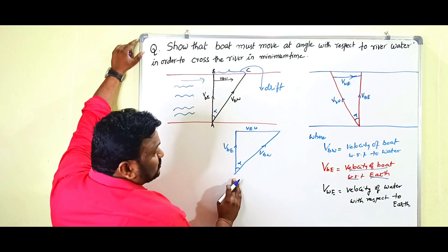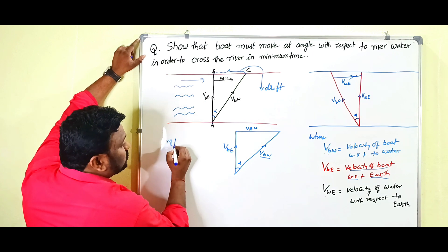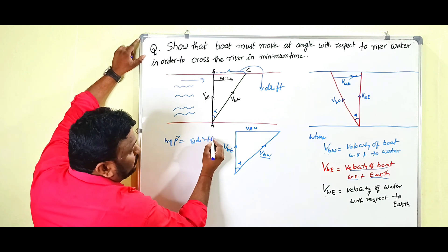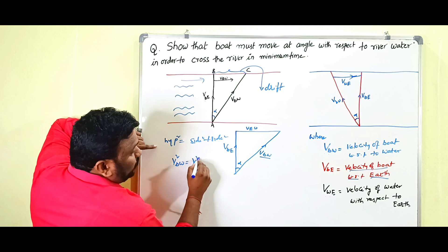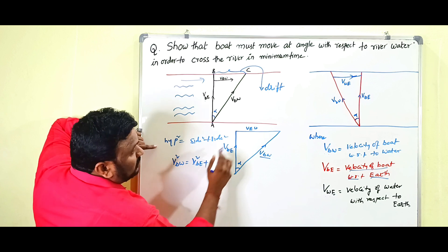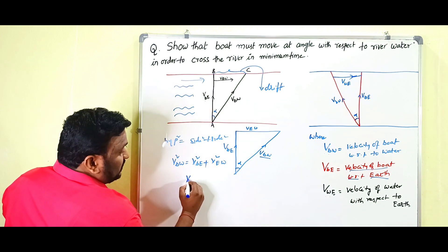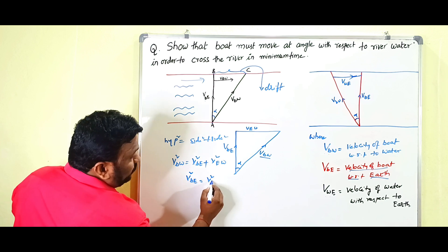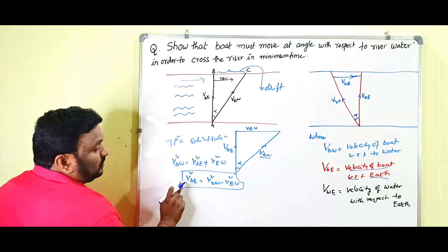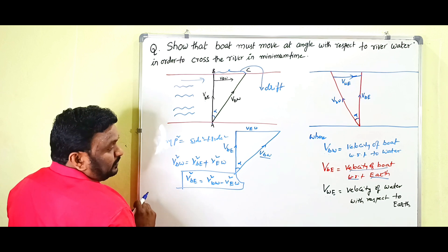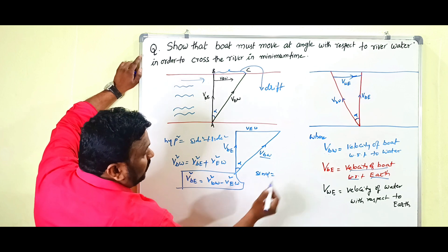From that right-angle triangle, by the Pythagorean theorem, hypotenuse squared equals side squared plus side squared. Here v_bw is the hypotenuse, so v_bw² = v_be² + v_ew². From that we get v_be² = v_bw² − v_ew². This is the expression for the velocity of the boat with respect to earth.